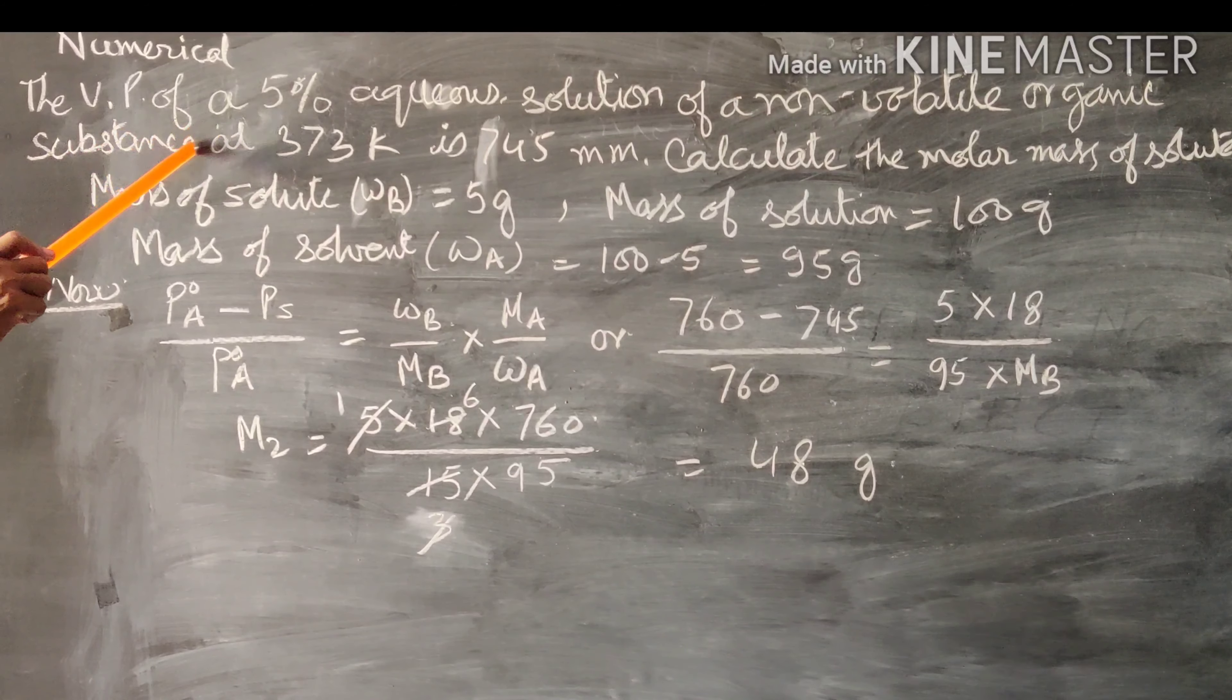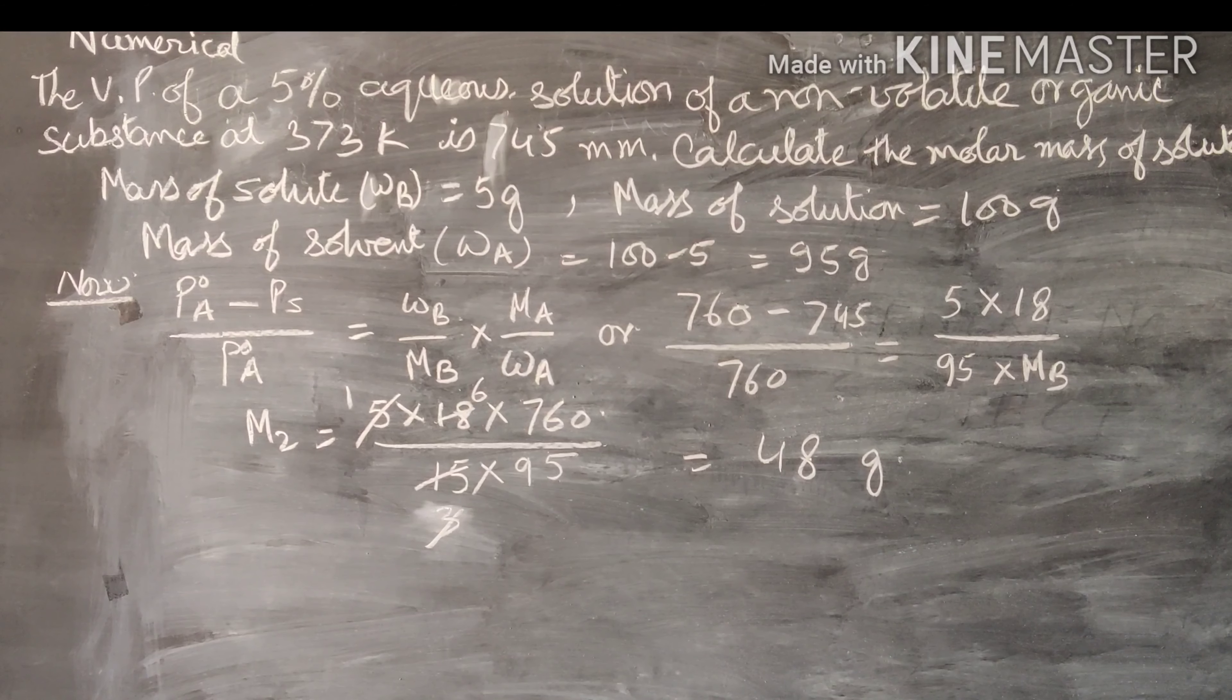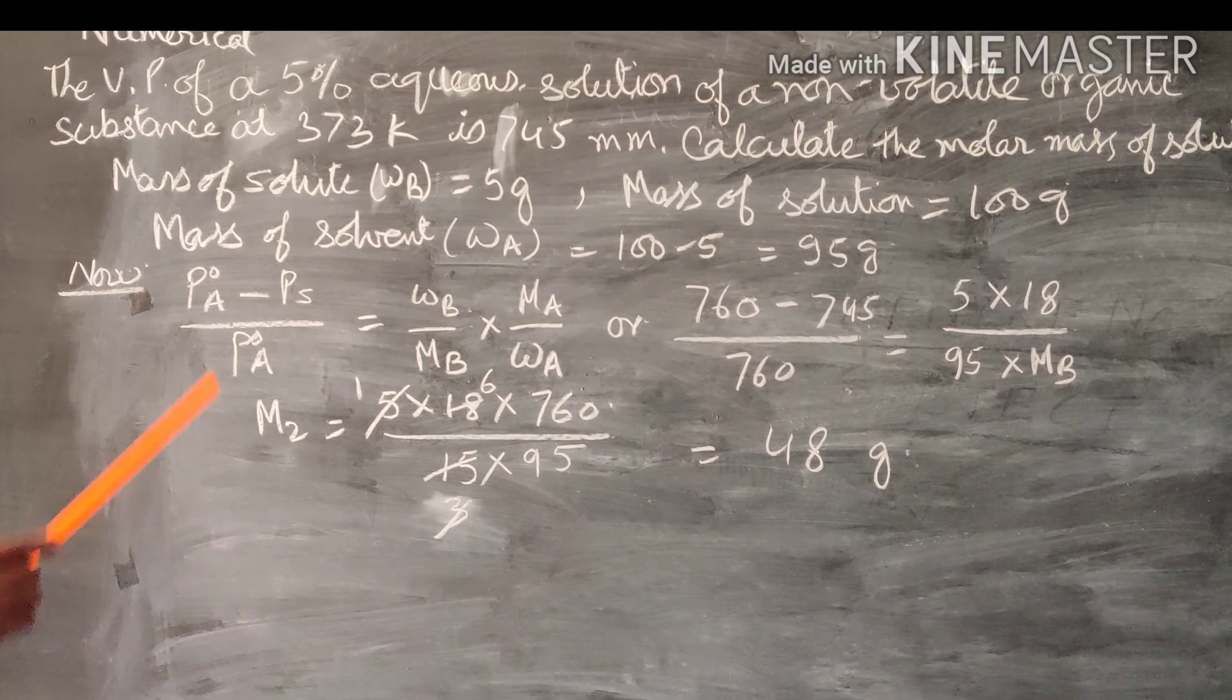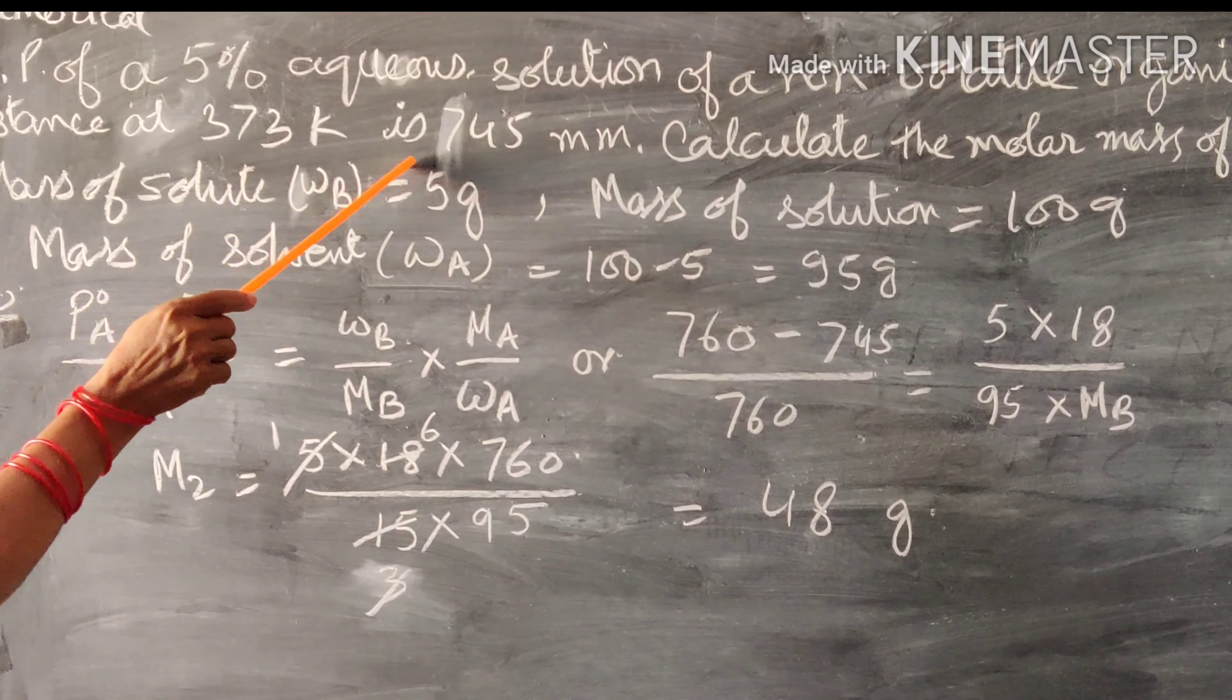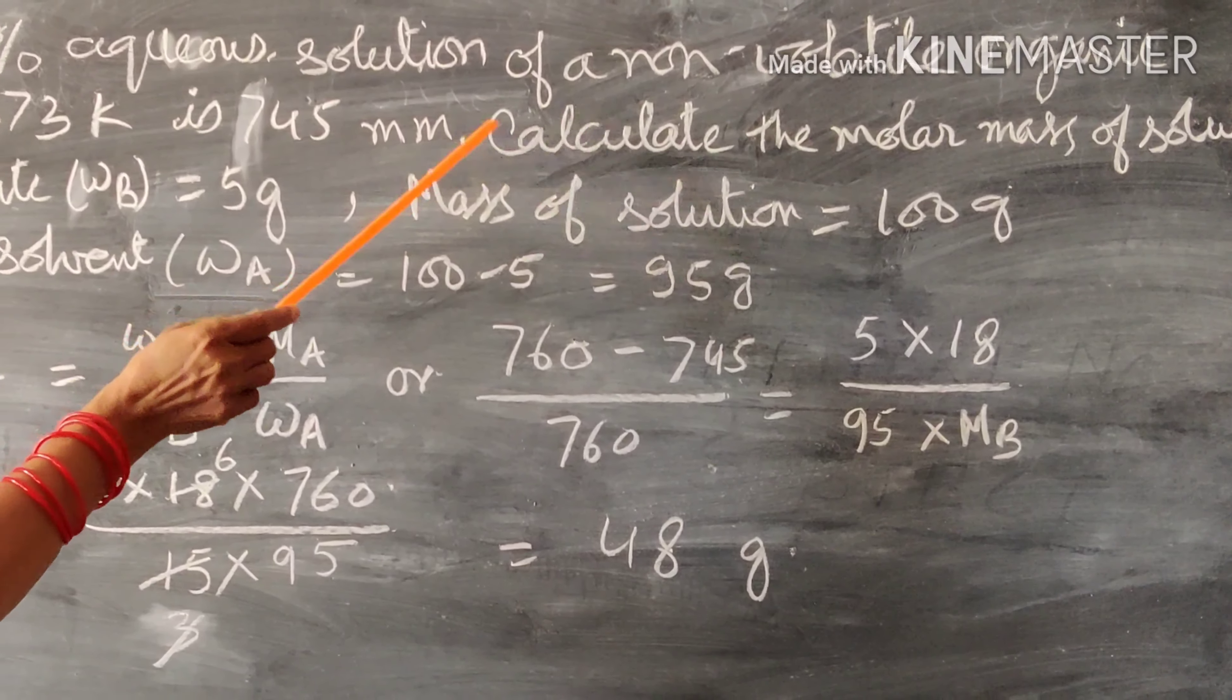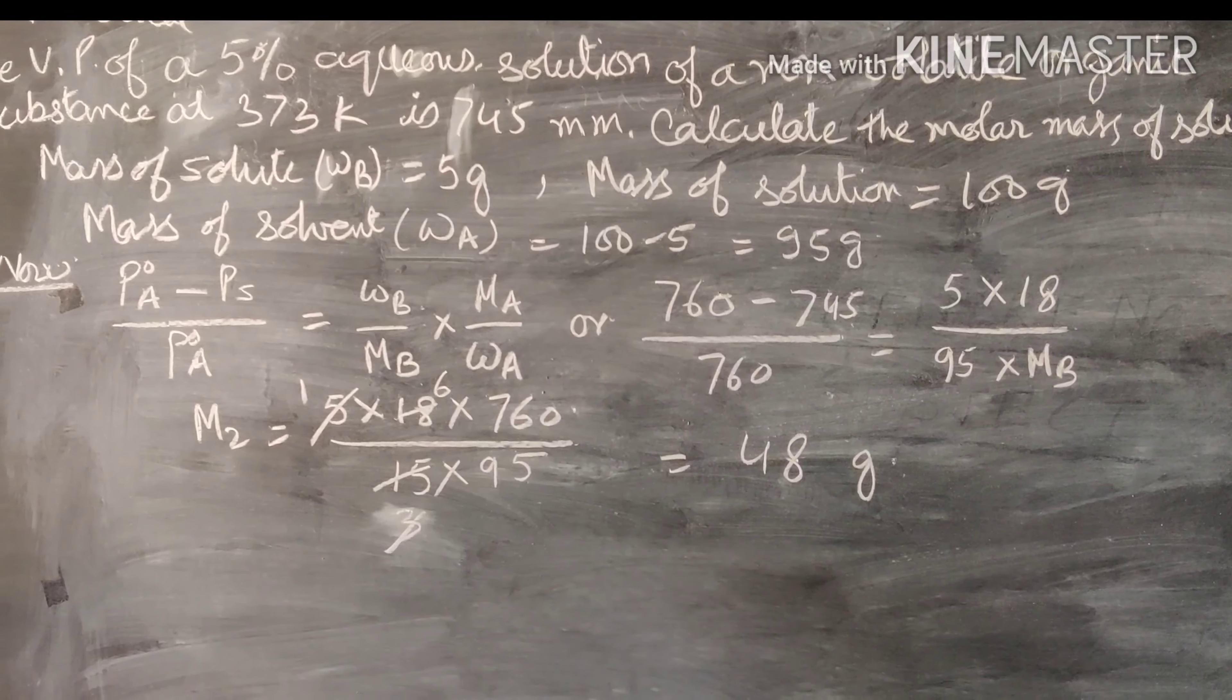The vapor pressure of a 5% aqueous solution of an unknown volatile organic substance at 373 K is 745 mmHg. Calculate the molar mass of the solute.